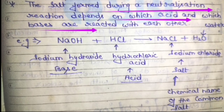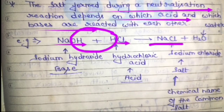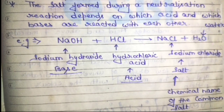Let us see an example of neutralization reaction. The base we take is sodium hydroxide (NaOH), and the acid we take is hydrochloric acid (HCl). When NaOH reacts with HCl, the OH and H combine to form water (H2O), and NaCl — sodium chloride — is formed as the salt. So the chemical equation is: NaOH + HCl → NaCl + H2O. I hope the concept and chemical equation of neutralization reaction — acid and base reacting to form salt and water — is now clear.